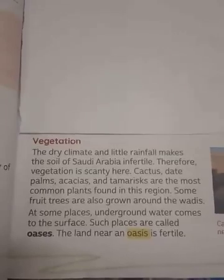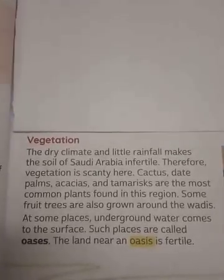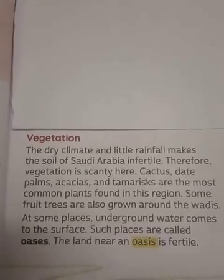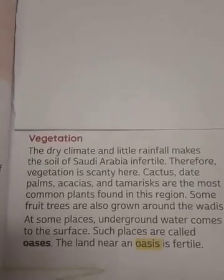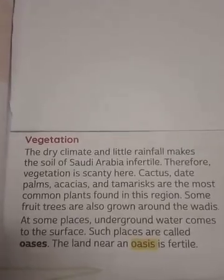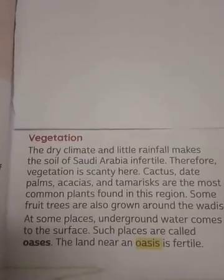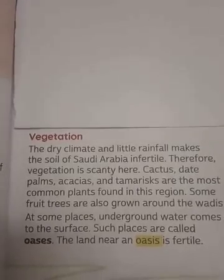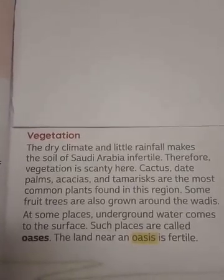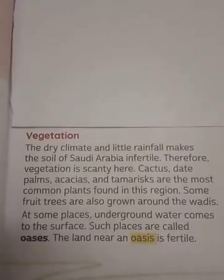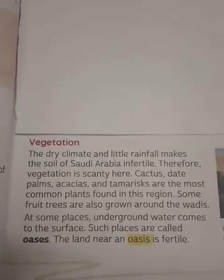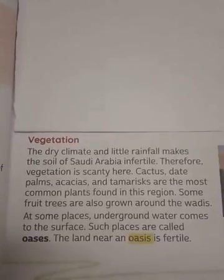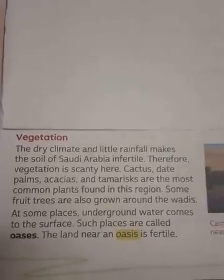Now moving on to vegetation. Due to the dry climate and little rainfall in Saudi Arabia, the soil is not fertile enough to grow plants, herbs, or shrubs. Therefore, the greenery is very less. Plants like cactus, date palms, and tamarisks are the most common plants seen in Saudi Arabia. They also grow fruits and small trees, but in fewer numbers, which are grown around the wadis.